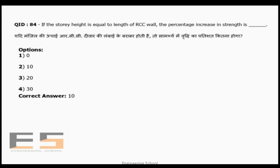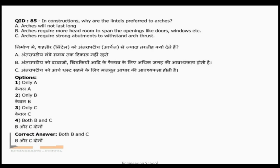Question 84: If the story height of an RCC wall equals its length, the percentage increase in strength is approximately ten percent. For example, a wall that is 10 meters long and 10 meters high will have its strength increased by about 10 percent.